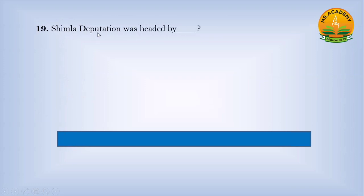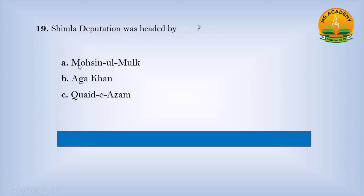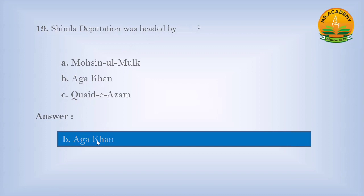The Shimla Deputation was headed by: Option A, Muslim Mulk; Option B, Agha Khan; Option C, Quaid-e-Azam. Answer: B — Agha Khan.